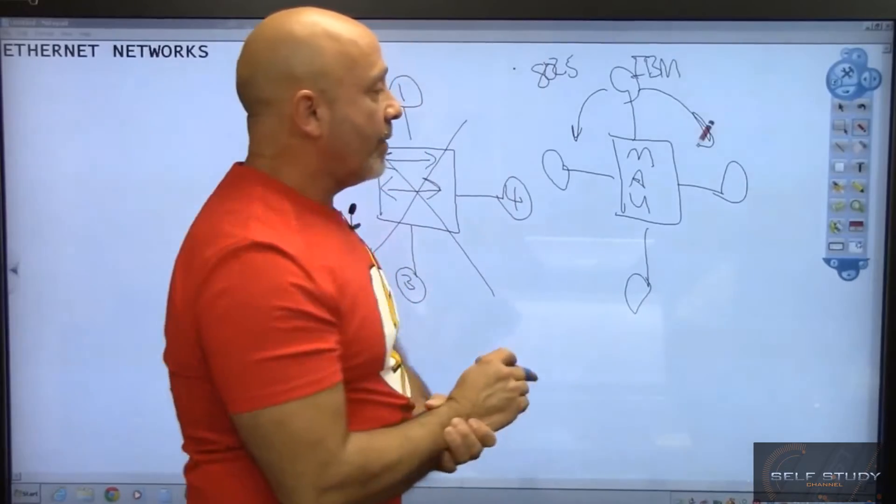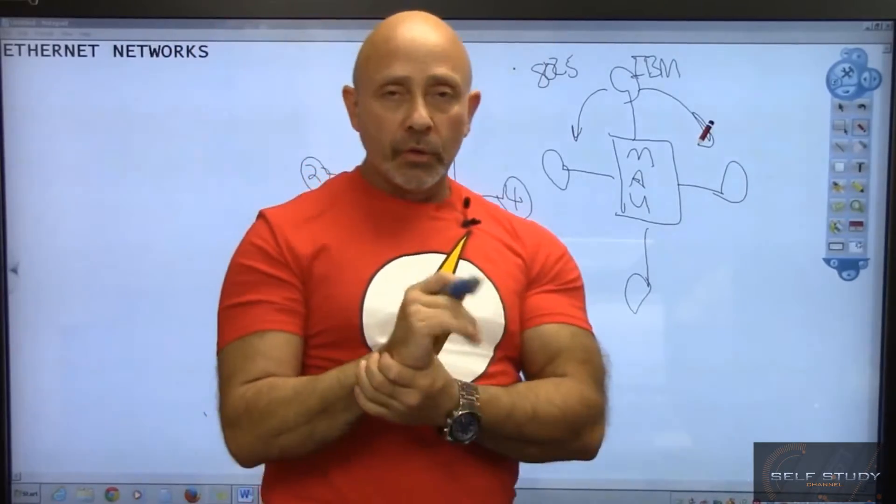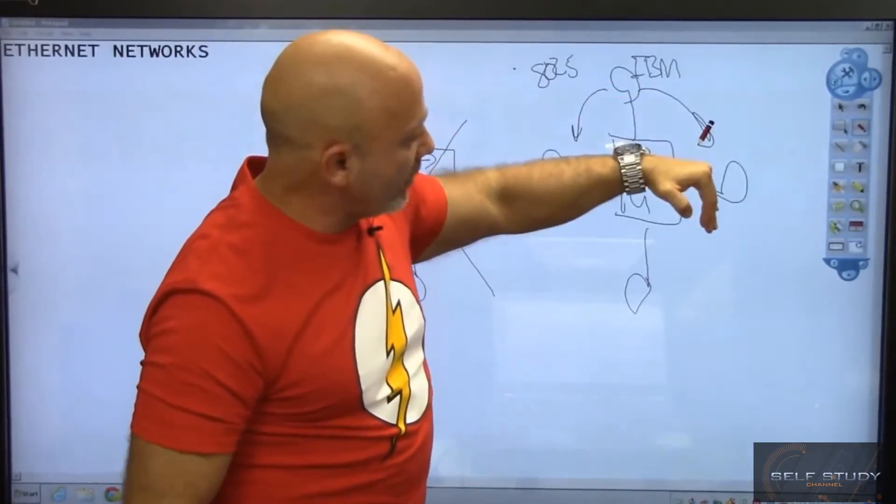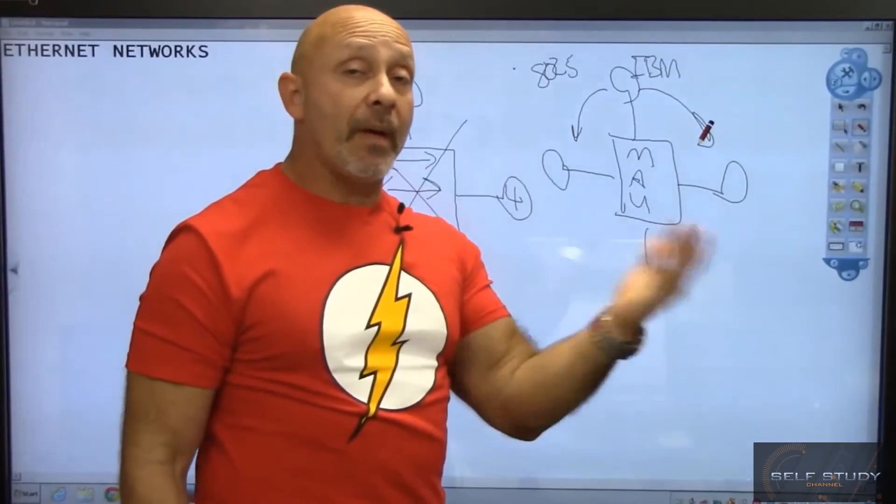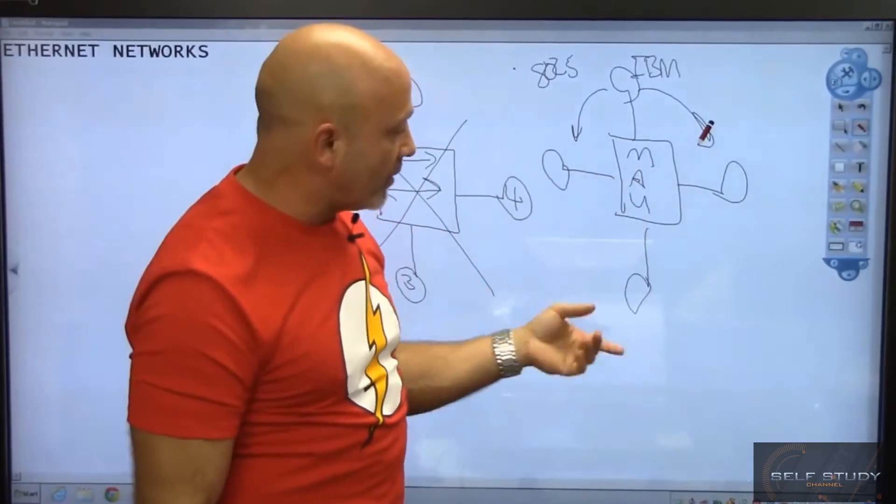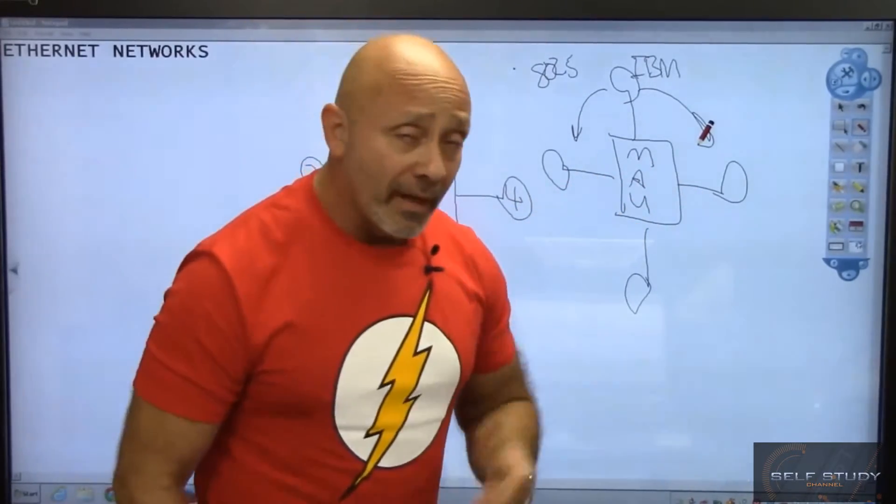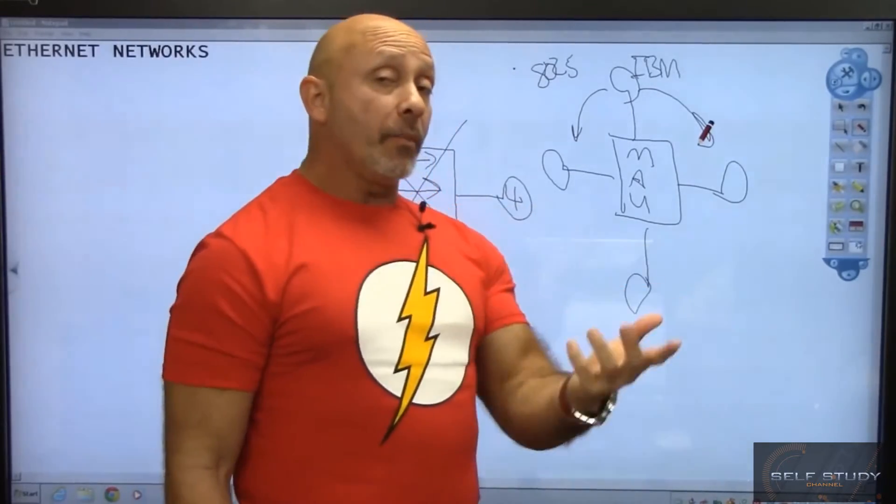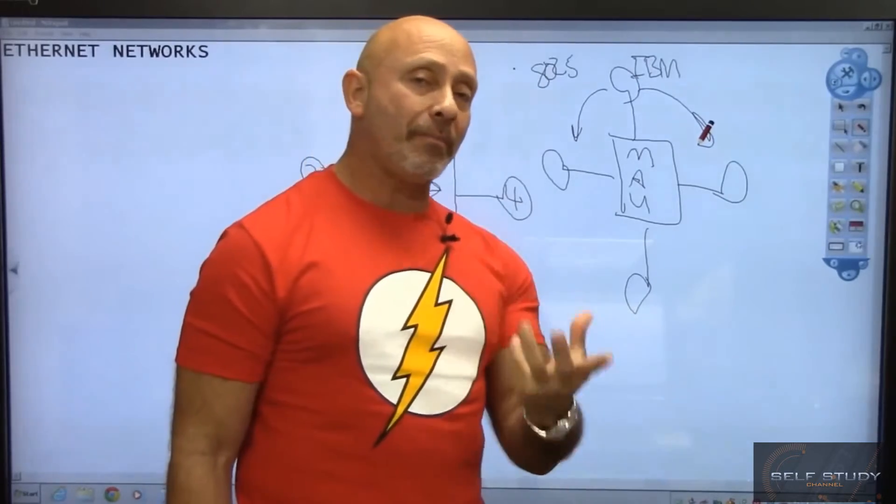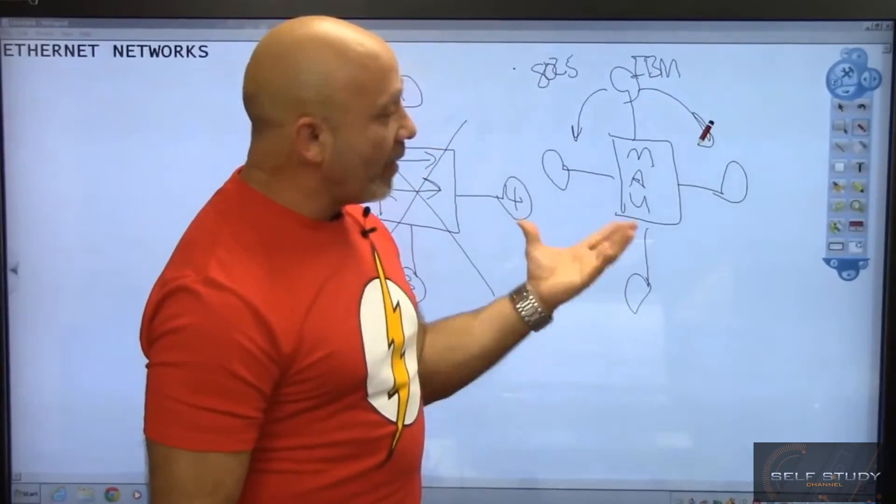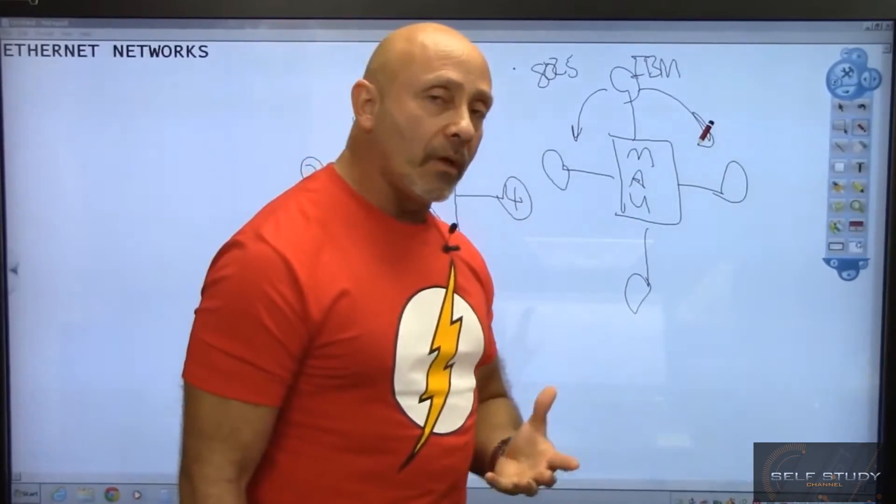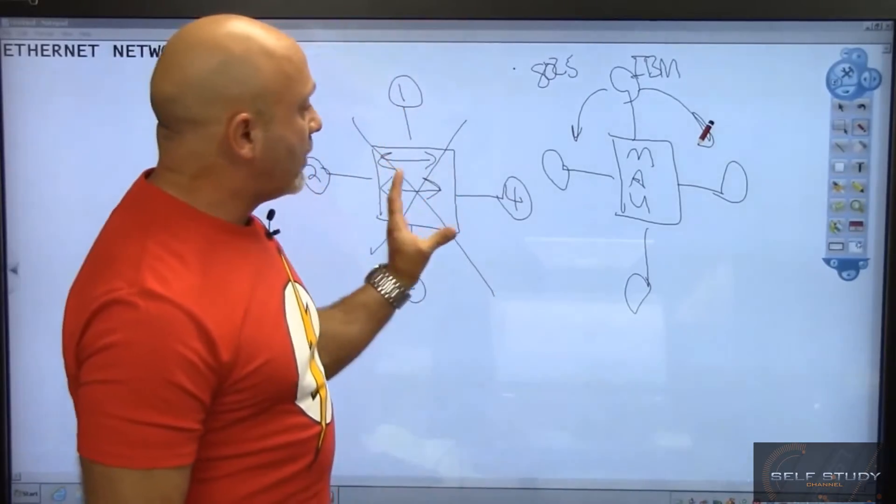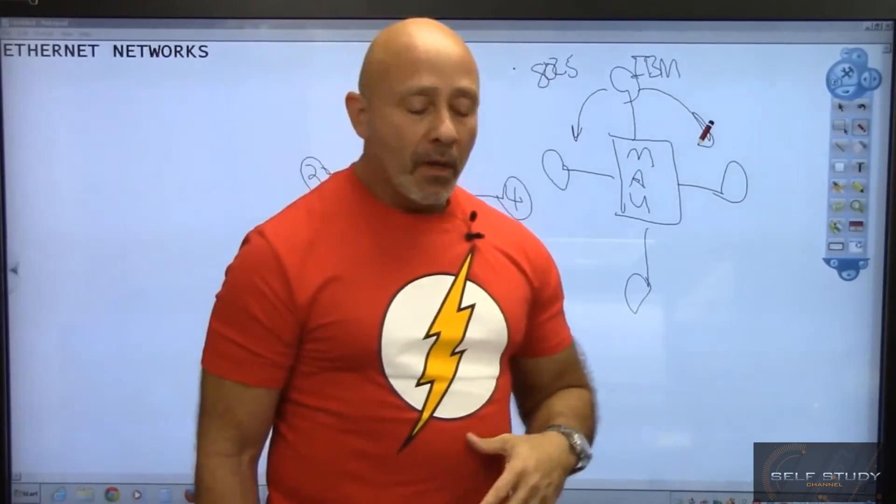It will go to its lower device and say, hey, is this you? Is this packet for you? Yes or no? And then it will send it on to the next one. Very slow, very reliable. It was based on token passing. That was the access method. The person with the token would actually speak, so it was a very reliable network but a very slow network at the same time. Therefore, Ethernet became king.